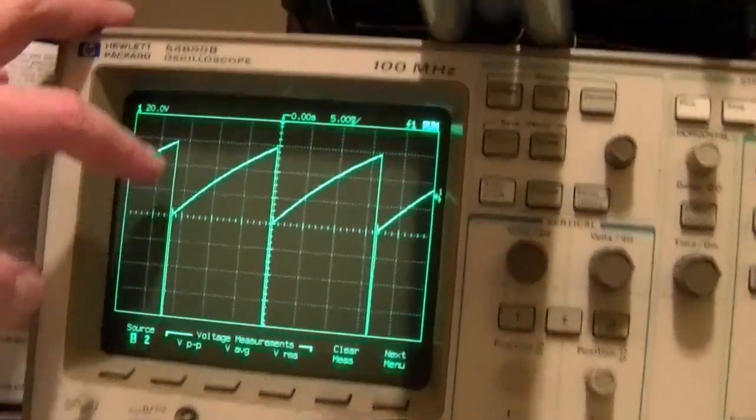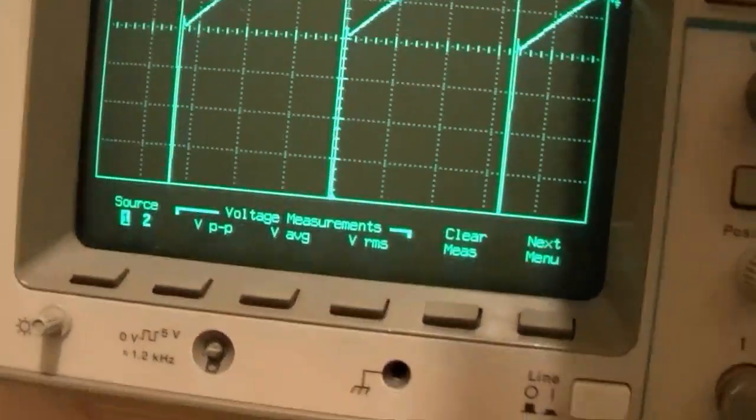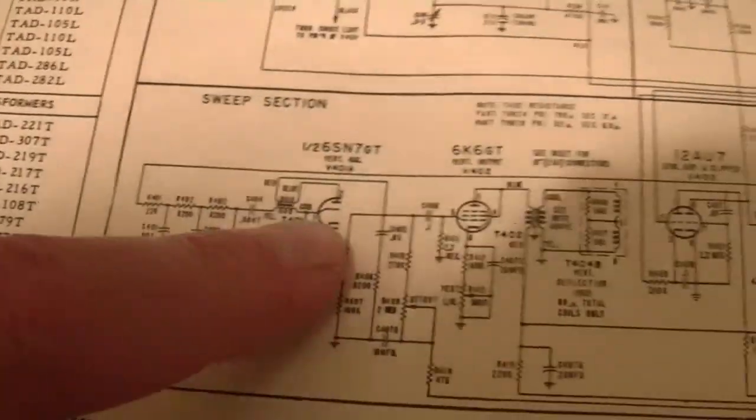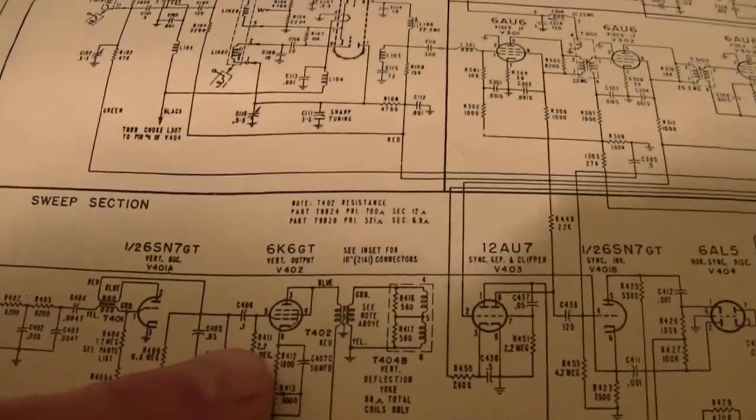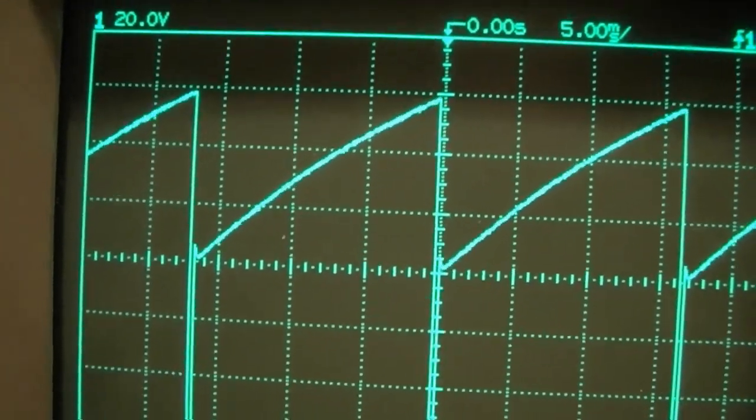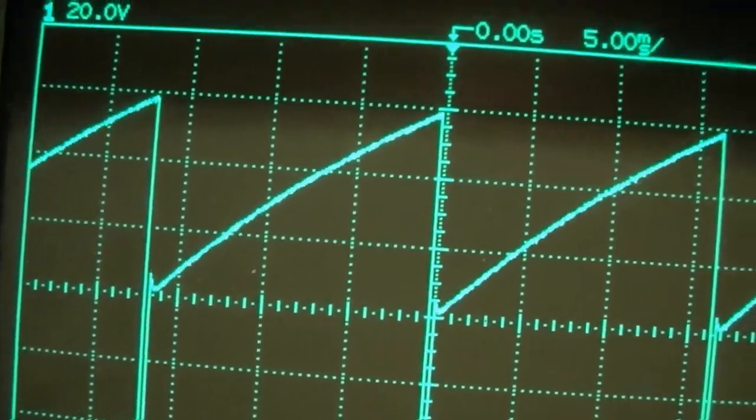What I'm looking at now is the input to the vertical output tube. That would be pin 5 here, so the vertical oscillator and then the vertical output tube. That to me looks like we got a little bit of a linearity issue there. That should be a nice straight sawtooth.